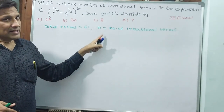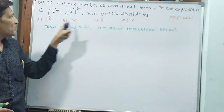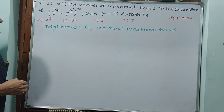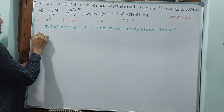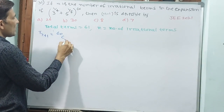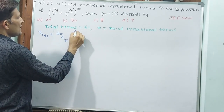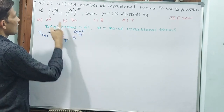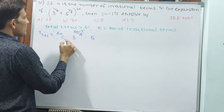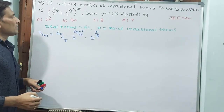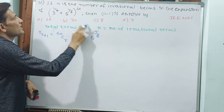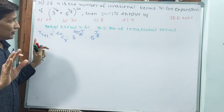Number of irrational terms — if you find that, it becomes n. n minus 1 should be divisible by which number, we will see. But first, the general term. T_(r+1) is equal to 60C_r times 3^((60 minus r)/4) times 5^(r/8). Here, 60 minus r over 4 is in the exponent of 3, and r over 8 is in the exponent of 5. This is the general term; in this general term, irrational terms we have to find.